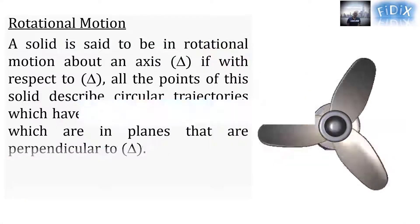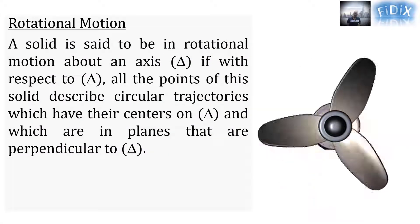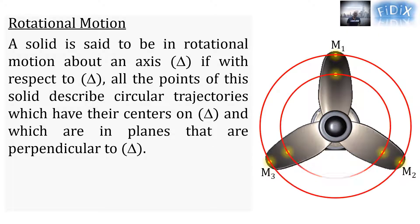A solid, which is the propeller in this case, is said to be in rotational motion about an axis delta if, with respect to delta, all the points of the solid describe circular trajectories which have their centers on delta and which are in planes that are perpendicular to delta. For example, the trajectories of points M and N in the solid are both circular, their centers are on the same axis of rotation delta.